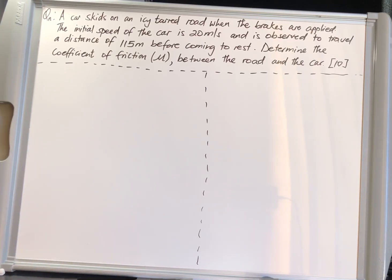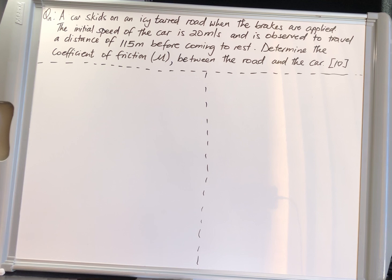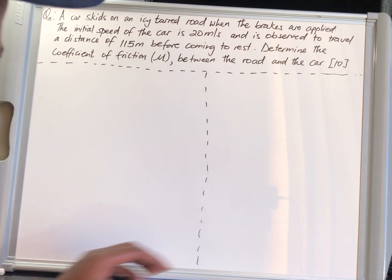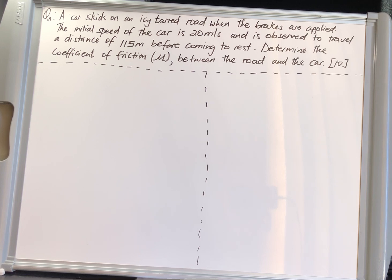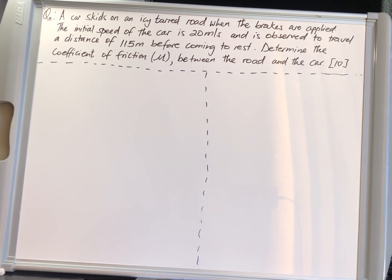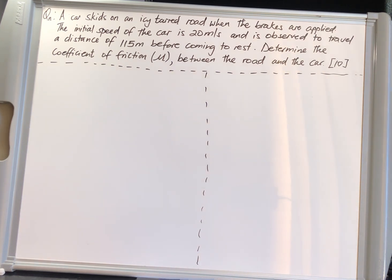We have a question on the board. I will be collecting data as I read the question. While a car skids on an icy road when the brakes are applied, the initial speed of the car is 20 meters per second and it is observed to travel a distance of 115 meters before coming to rest.